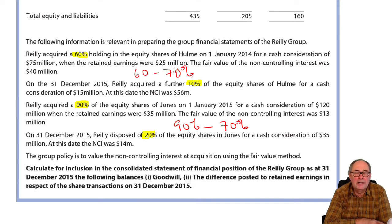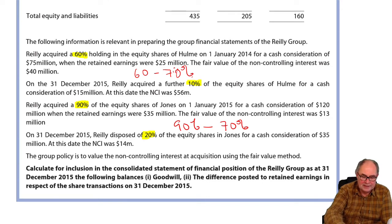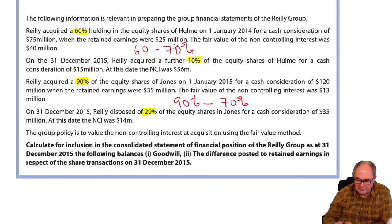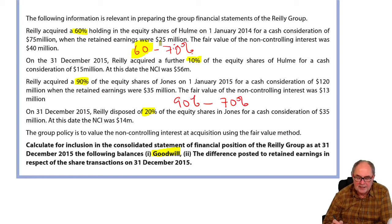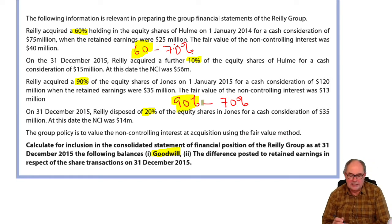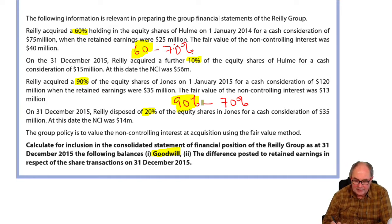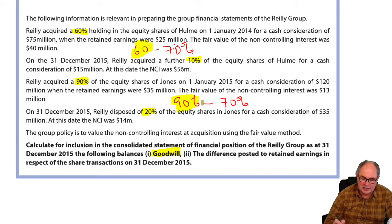So if we're asked to work out goodwill, goodwill must be measured on the day they first got control. When they first got control of Hume was when they got the 60%, and when they first got control of Jones was when they got the 90%. So we'll try and work out the goodwill on both of those companies.